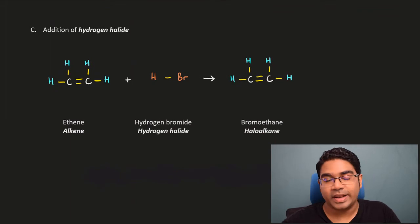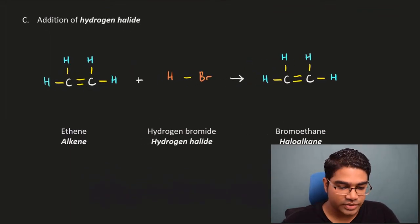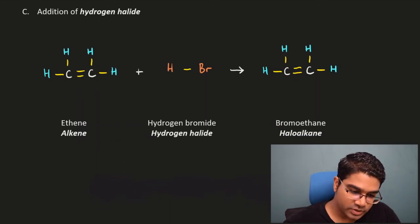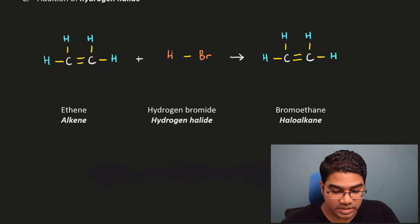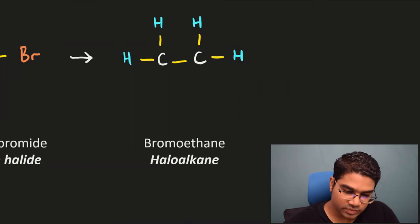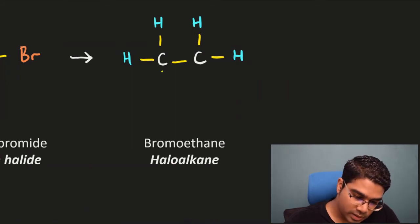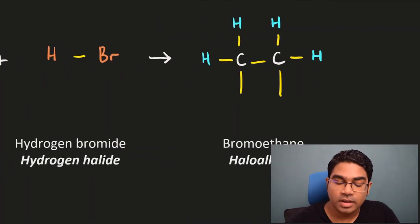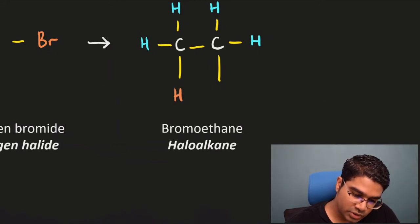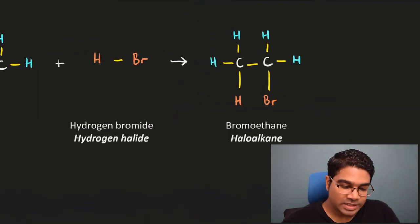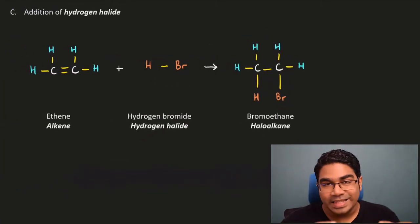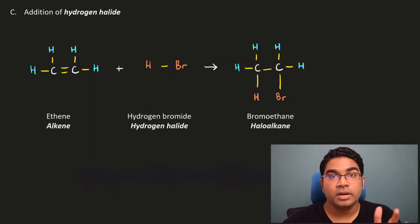The third addition reaction: we have added hydrogen and we have added halogen, so now we add a combination of the two — that is addition of hydrogen halide. This process doesn't have a special name; it is just addition of hydrogen halide. Taking hydrogen bromide as an example, the process is the same: remove the double bond, leave a single bond, and two new bonds form with the hydrogen and bromine atoms. This produces a haloalkane. The addition of halogens and hydrogen halide to alkenes is spontaneous — no special conditions are needed for these two reactions.